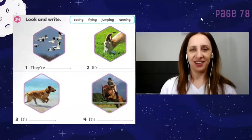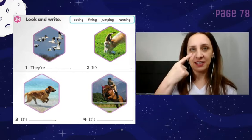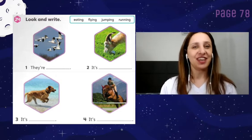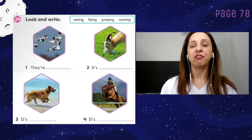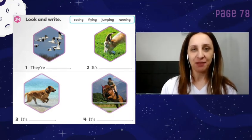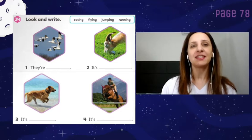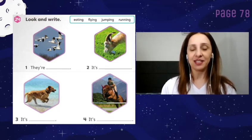Let's start the activity number 24. You are going to look at the pictures and write the actions. Vamos começar a atividade número 24. Você vai observar as imagens, preste bastante atenção, e escrever o nome da ação que os animais estão praticando, okay? Let's go!